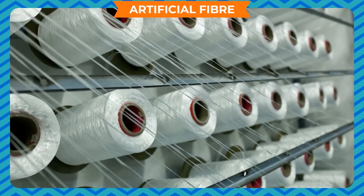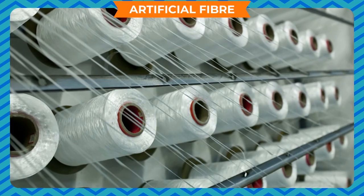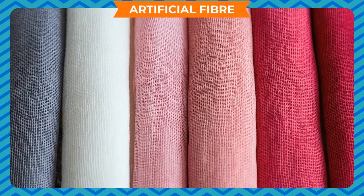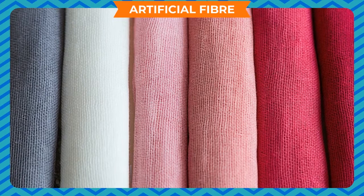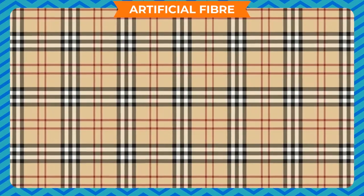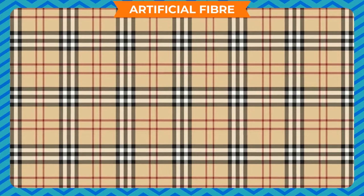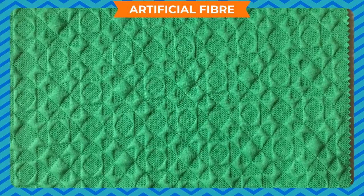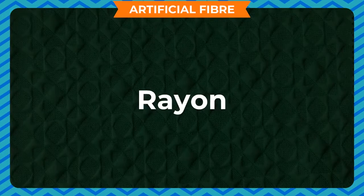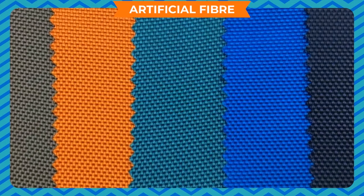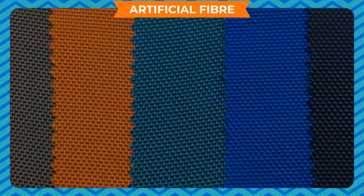A synthetic fiber is a chain of small units joined together to form a long chain called polymer. There are two types of synthetic fibers. Regenerated synthetic fiber: it is made from natural fibers that have been chemically processed. Example: rayon. True synthetic fiber: it is made entirely from chemicals. Example: nylon.